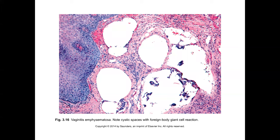Vaginitis emphysematosa is a lesion usually not a tremendous problem to identify, but may be related to prior surgical or interventional situations such as hysteroscopy. These have variably sized cystic spaces and may have occasional lining giant cells and histiocytes. This presumably occurs with insufflation of air into the mucosa and a foreign body reaction to that air.